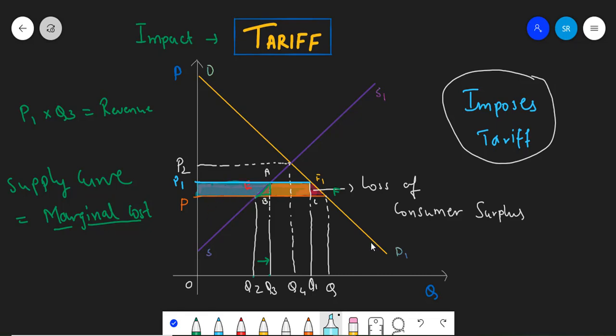As the decrease of consumer surplus has been transferred to the producers, this rectangle showcases us the redistributive effect.